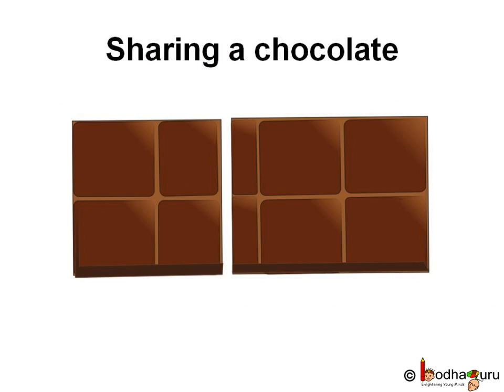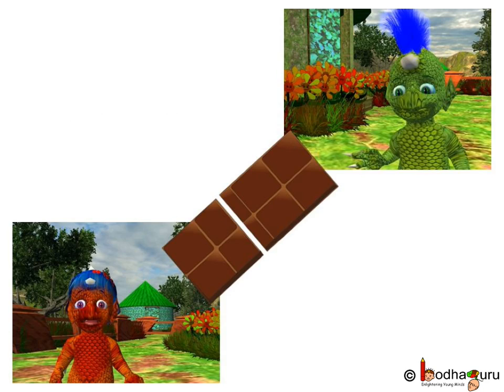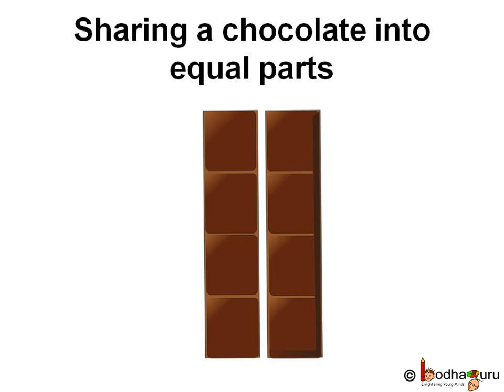Let us cut the chocolate bar into two parts. One is a small part and the other is the bigger part. As it is a chocolate, no one would like to take the smaller part, right? Both you and your sister would like to have the bigger piece. But if we cut it into two equal parts, then there won't be any fight over the chocolate.